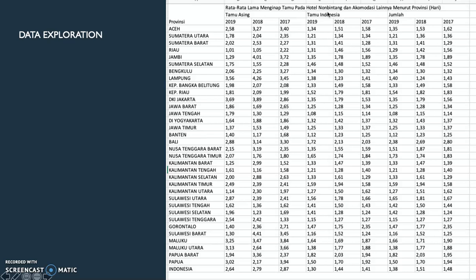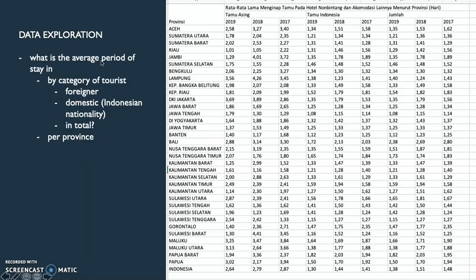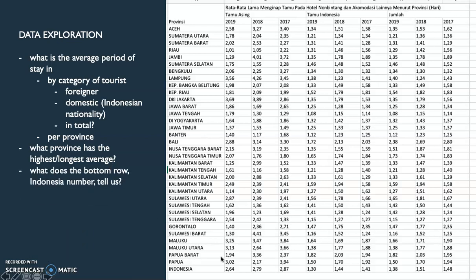You have foreign tourists, domestic tourists, and combined. So based on that information, you can try to make some questions. For example, the question I make based on my exploration is: I can try to find the average period of stay based on category of tourists — foreign tourists, domestic tourists, and combined. Or I can find information about the average length per province over years, and then what province has the highest or longest average. Or I can also ask what does the bottom row Indonesian number tell us?